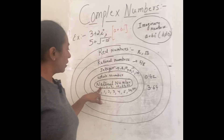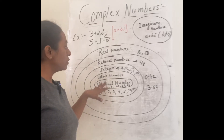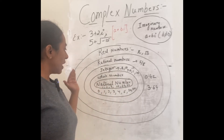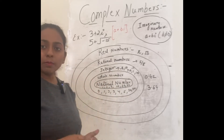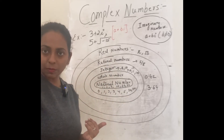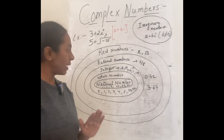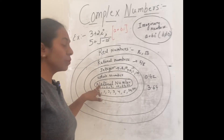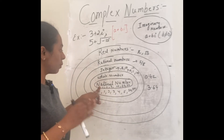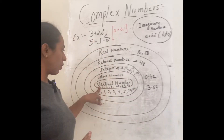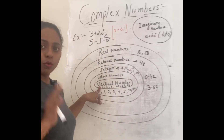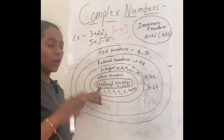Natural numbers are numbers like 1, 2, 3, 4, 5 and so on. Natural numbers exclude all negative numbers, zero, and fractions — so no negative numbers, no fractions, no zero.